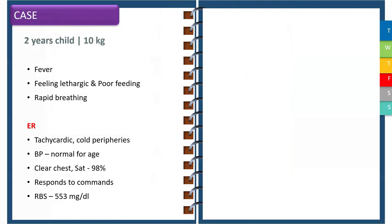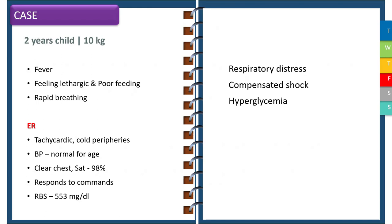We have a 12-year-old child who presents with fever, lethargy, poor feeding, and rapid breathing. On assessment he is tachycardic with cold peripheries, normal blood pressure, clear chest with normal saturation, and responds appropriately to commands. His blood sugar at admission is 553 mg per deciliter. At triage we classify this child to have respiratory distress, compensated shock, and hyperglycemia.